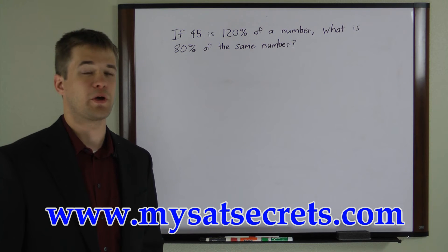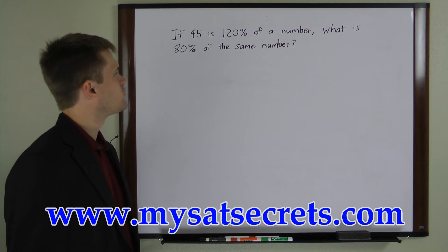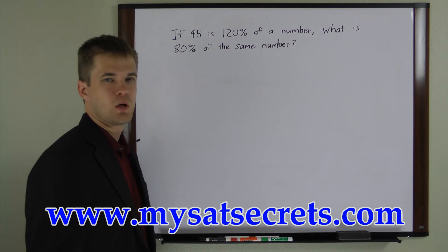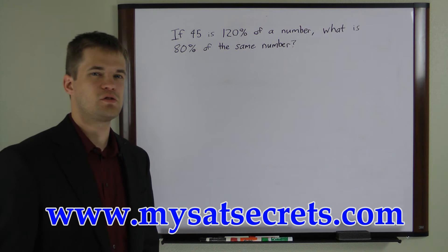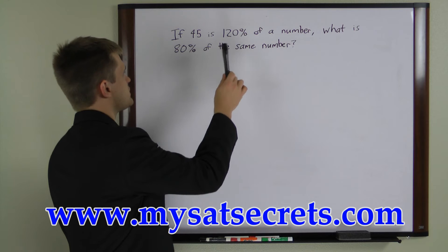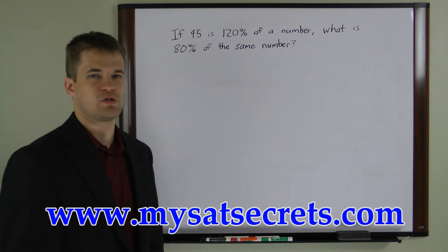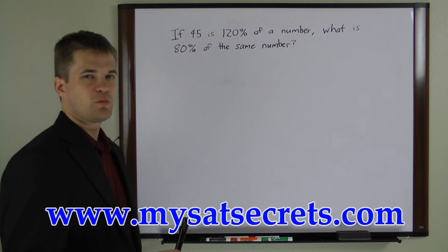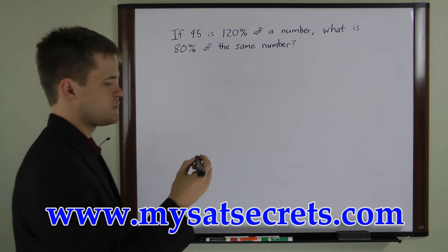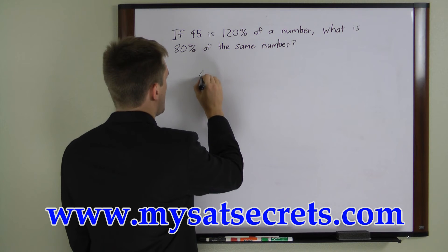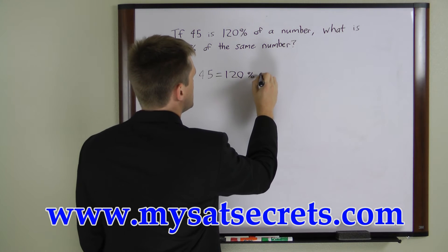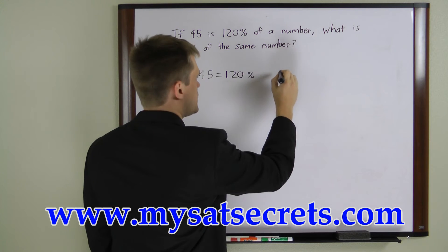Let's take a look at this problem: if 45 is 120% of a number, what is 80% of the same number? This is a two-step percentage multiplication problem — first we work backwards with one percent, then forwards with the other. Let's write the first equation: 45 equals 120% times x, where x is the unknown number.